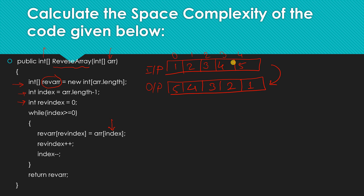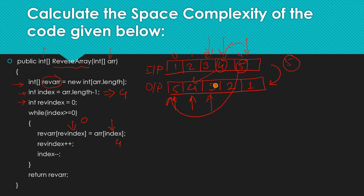So if our array length is 5, the index will be 4, and the reverse index starts at 0. What it does is take the element at the fourth position and copy it to the 0th location, then increase this index and decrease the other index. It keeps copying, decreasing, and increasing until at the end we get the reversed array as output.